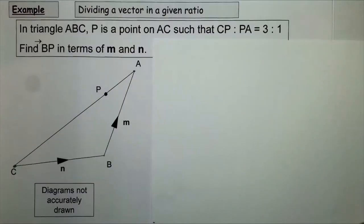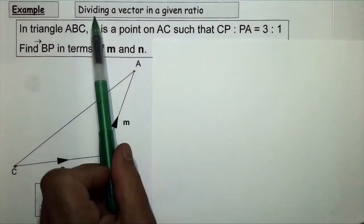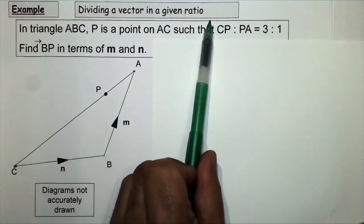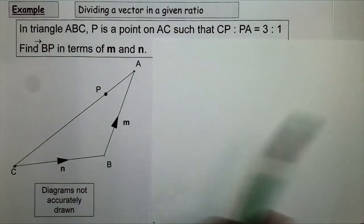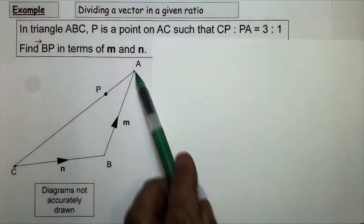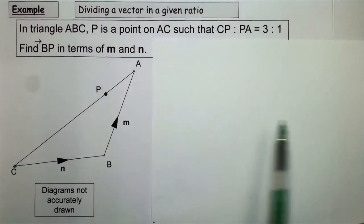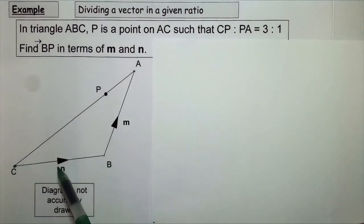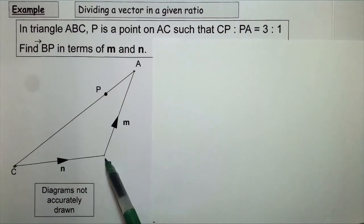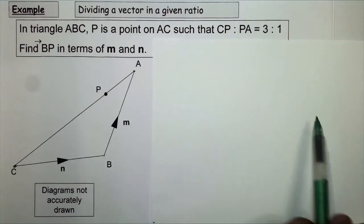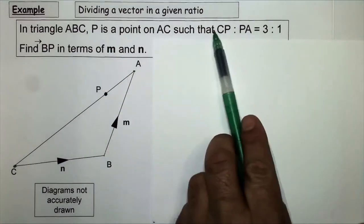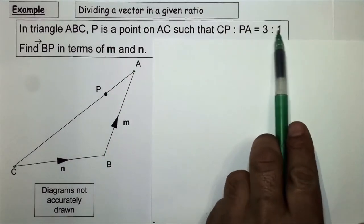In this example, we are looking at dividing a vector in a given ratio. We have a triangle ABC, and we're told that vector CB equals n, BA equals m, and P is a point on CA such that it divides CA in the ratio 3 to 1.